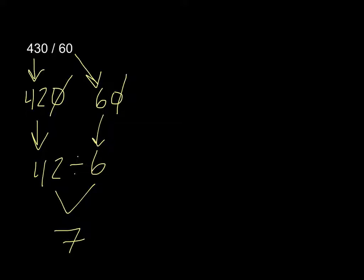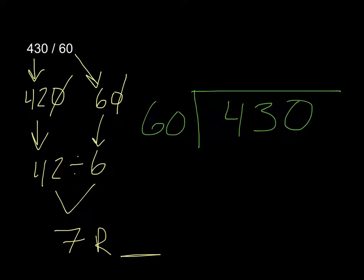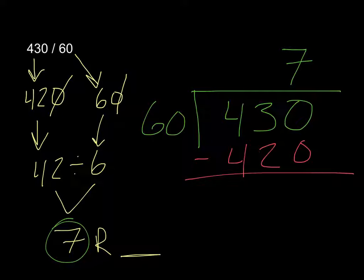Now again, that leaves me a remainder. I'm not sure what that remainder is right now because I haven't solved for that yet. But let's look at solving it another way. We're going to use our estimate of 7. 60 times 7 is 420. And we're going to line that up underneath 430. 0 minus 0 is 0. 30 minus 20 is 10. And 400 minus 400 is 0. So again, I have 7 with a remainder of 10.